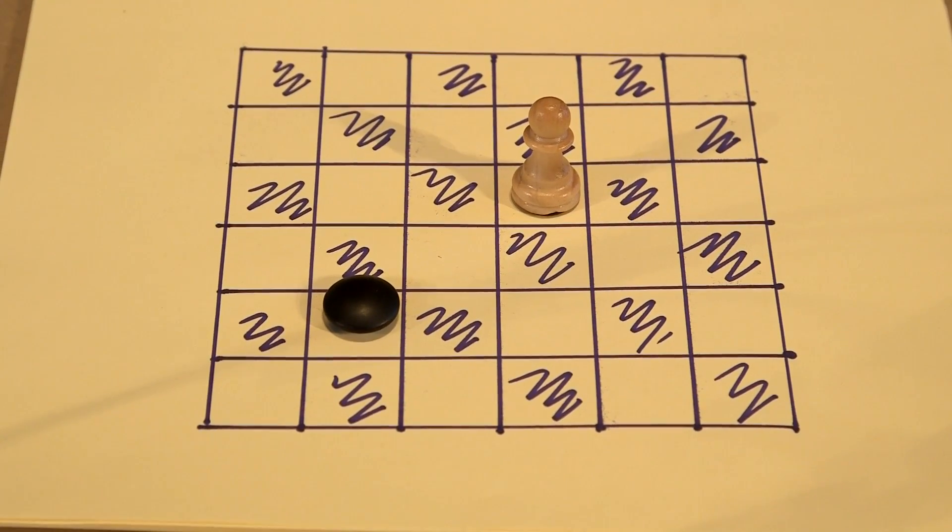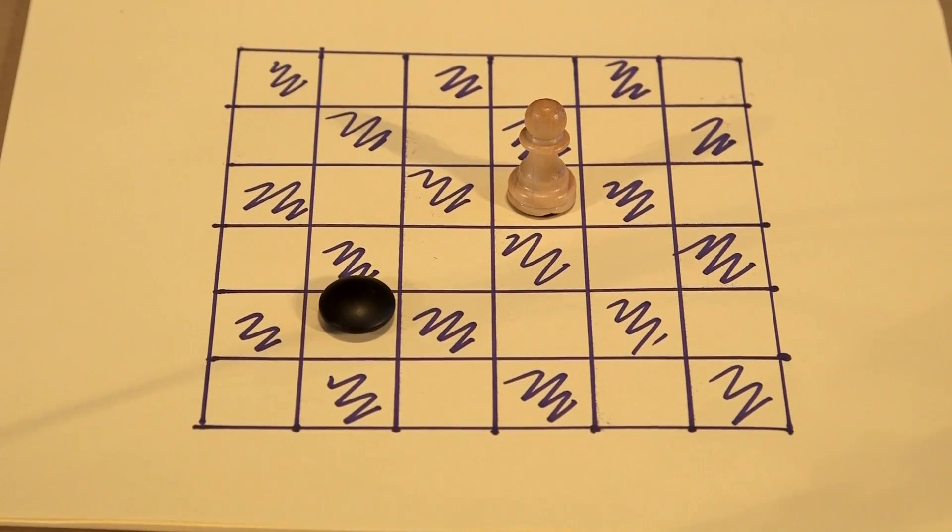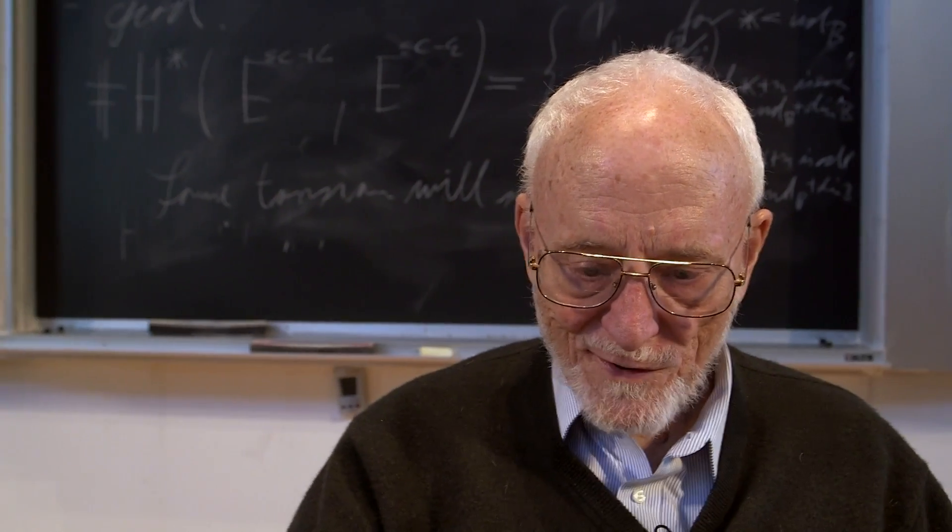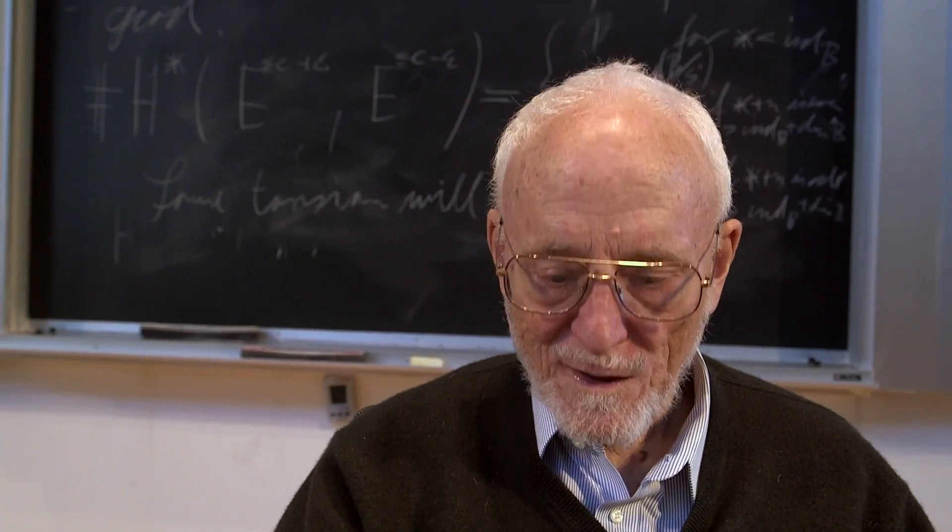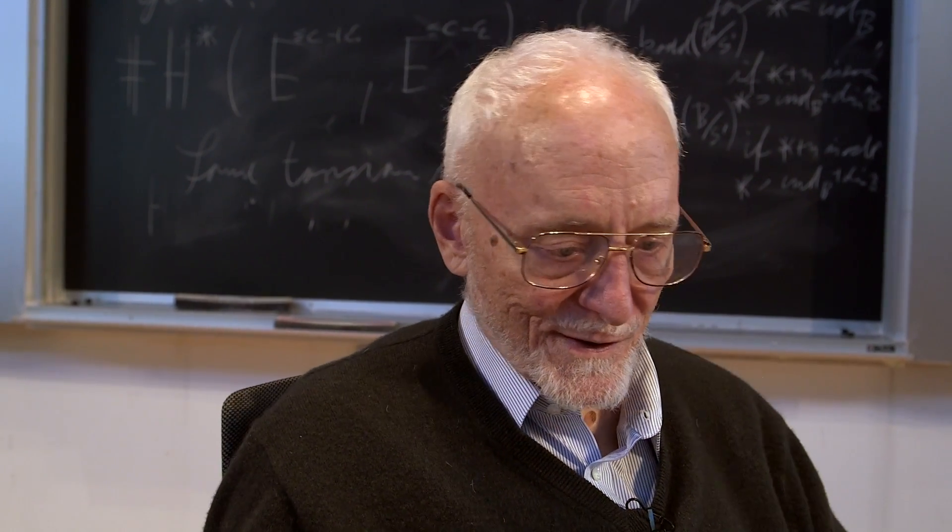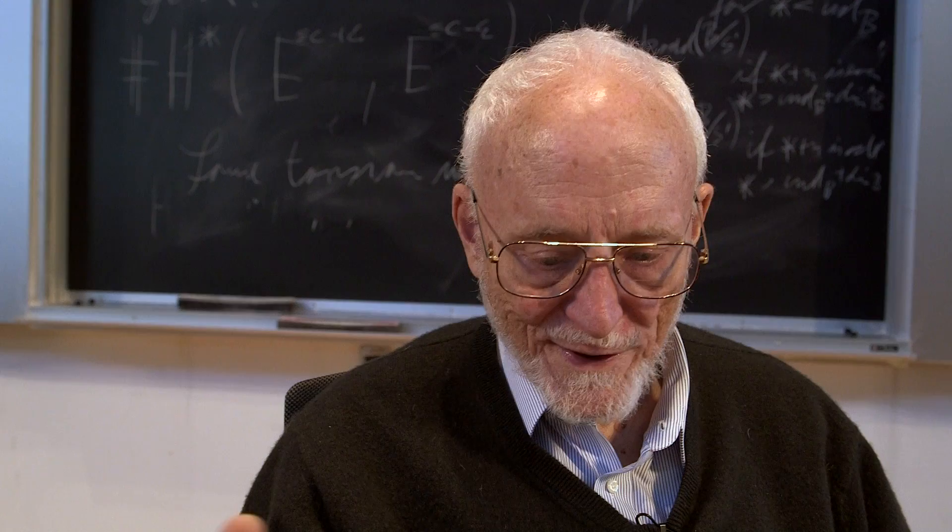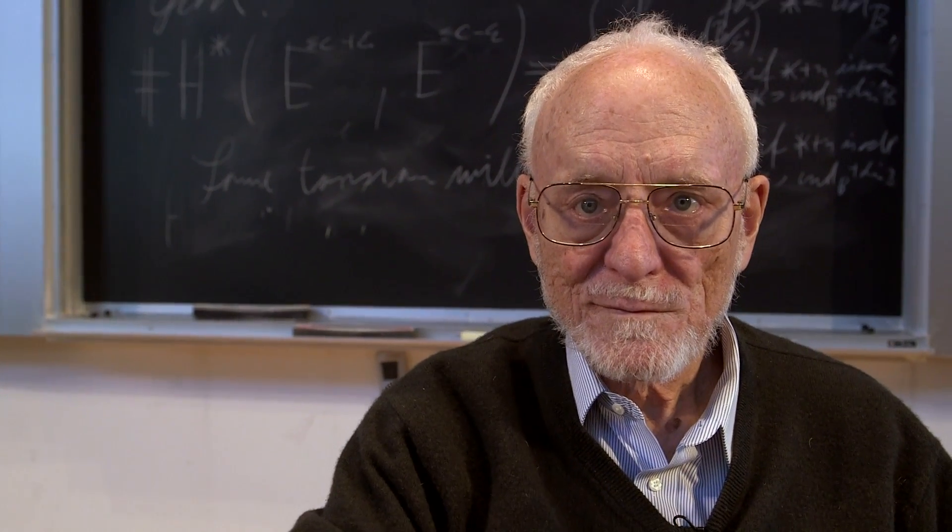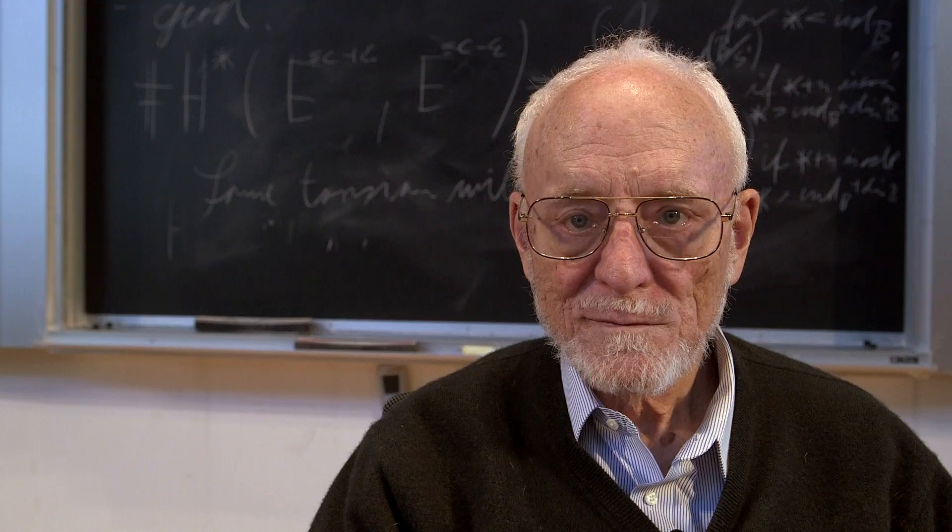There's no capturing. All the Amazons are immortal. They run about shooting flaming arrows. And eventually the board gets blocked up with flaming arrows and somebody can't move. And when that happens because they're unable to move, then the game's over and the player unable to move loses. Or the player who did the last legal move is the winner.